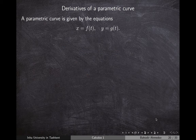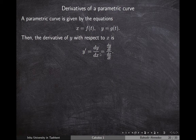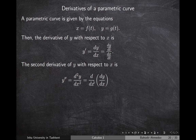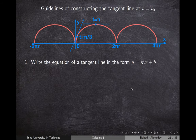Let's discuss how to find tangent lines to parametric curves. First, let's discuss how to find the derivative of y with respect to x. If x is a function of t and y is a function of t, then dy/dx is found by dividing dy/dt by dx/dt. The second derivative of y can be found by taking the derivative of dy/dx with respect to t and dividing by dx/dt.